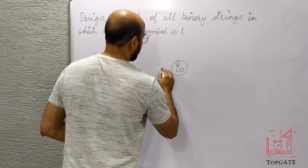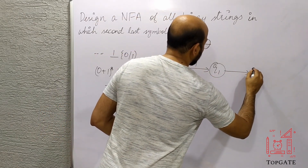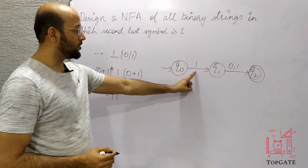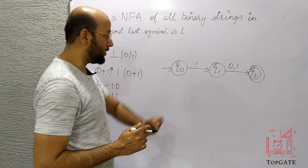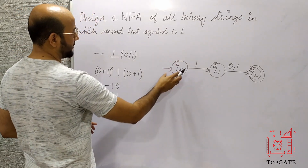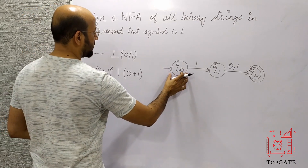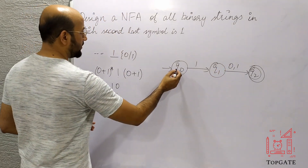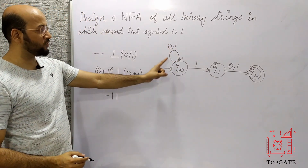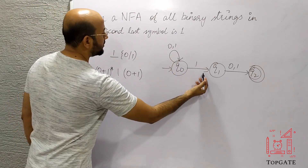The initial state is q0. From q0 to q1 we go with 1, and from q1 to q2 — which is the final state — we go with either 0 or 1. The second last character is 1 and the last character is either 0 or 1. Before this we can have any combination including null. If on q0 we add a self-loop of 0,1, that will start accepting any combination of zeros and ones before this 1. So strings like '0000', '1111', or '010101' followed by 1 and then 0 or 1.